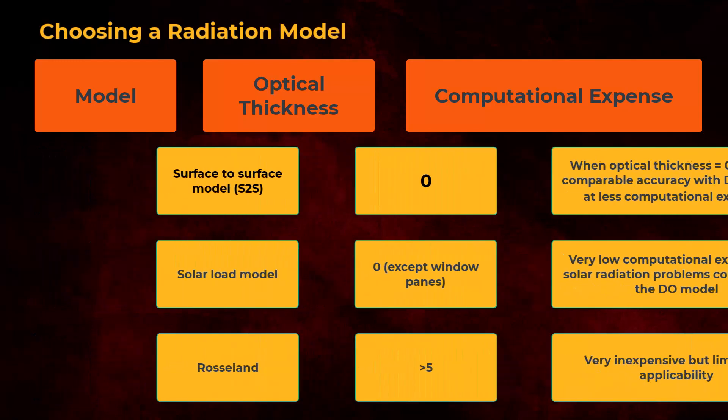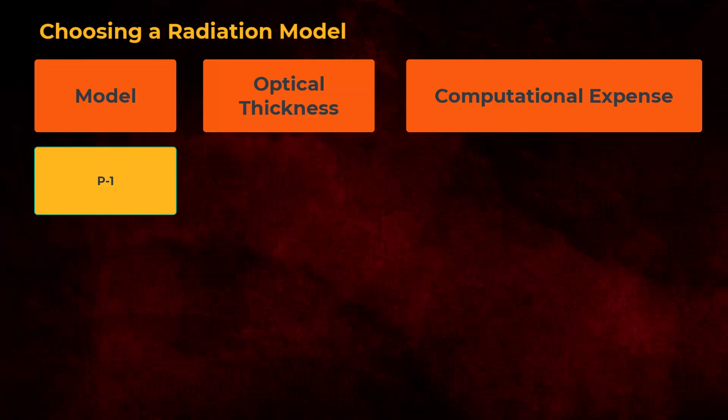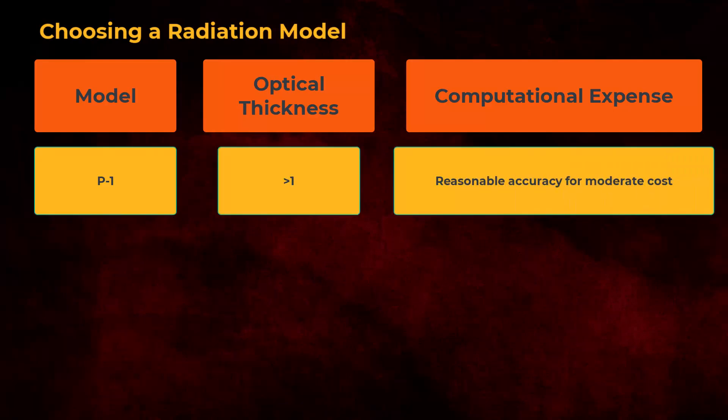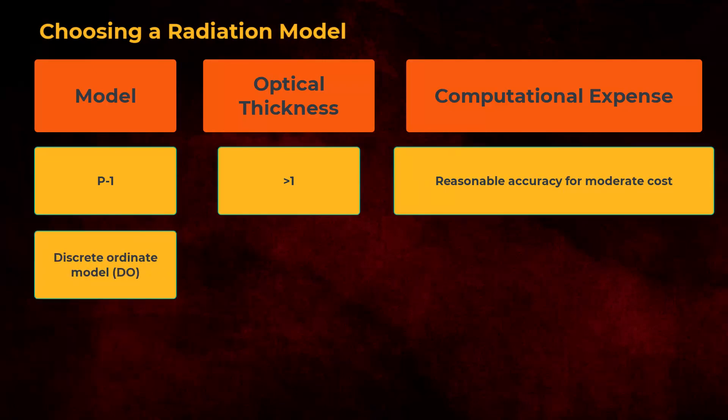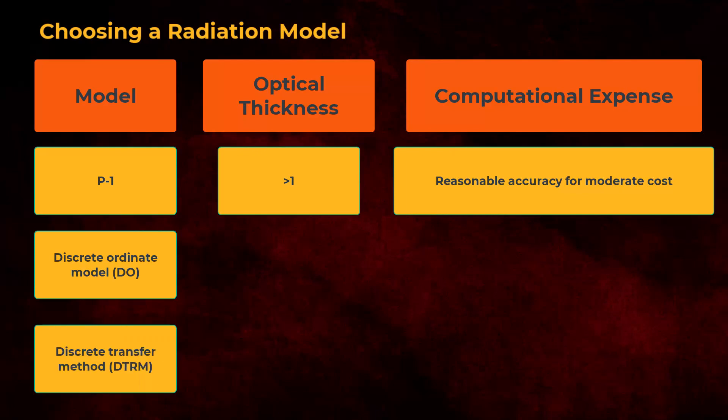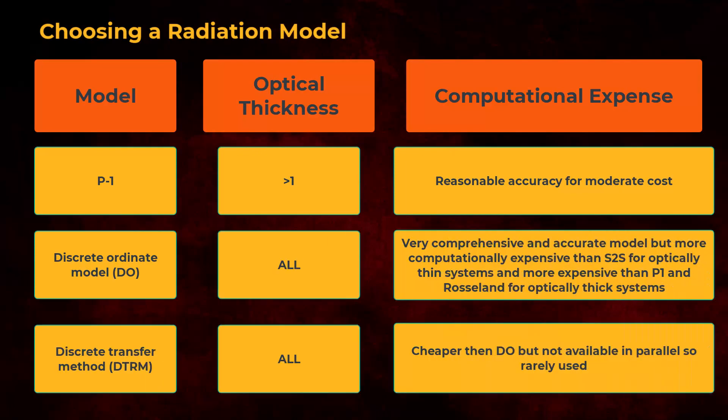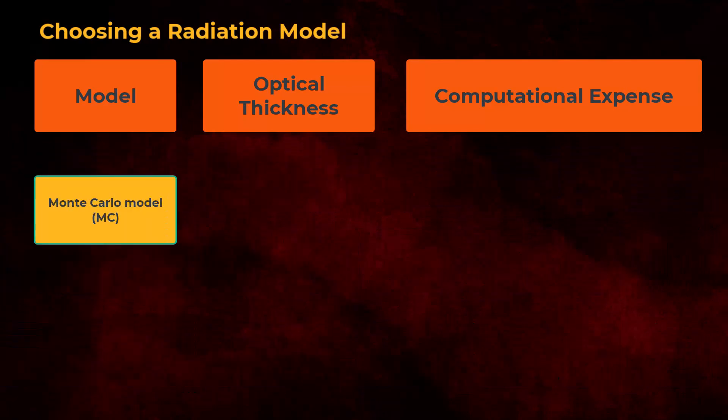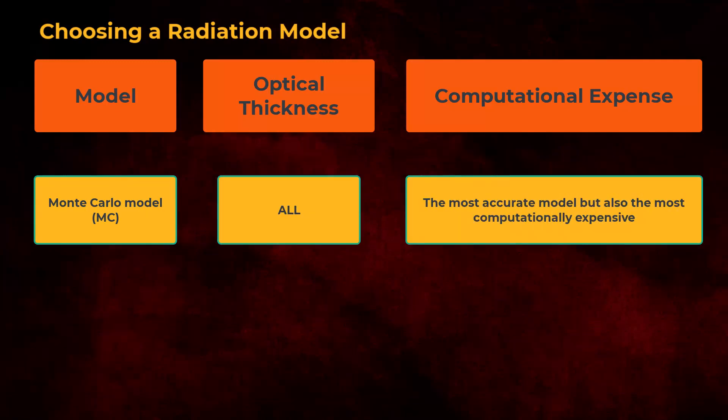The P1 model can be used if the optical thickness is around one or higher. The discrete ordnance model, which is often just called the DO model, and the discrete transfer method can be used with any value of optical thickness. The Monte Carlo model can also be used with any optical thickness.